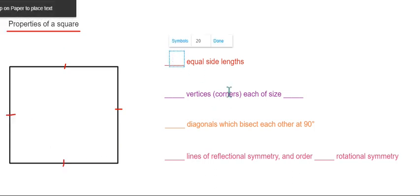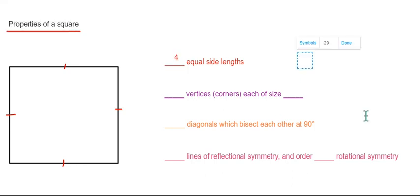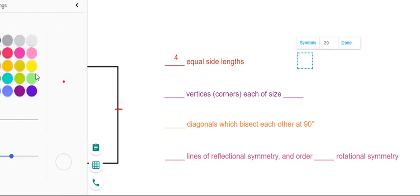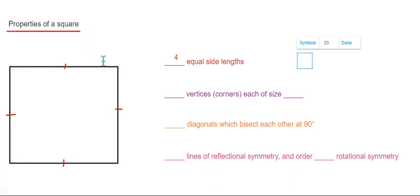So let's look at the number of vertices. The vertices are the corners of the square, so we have one, two, three, four, and the size of each internal angle is 90 degrees, which is the same as a right angle.